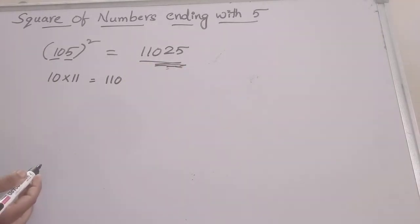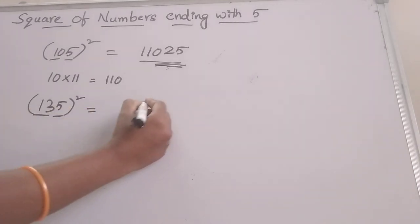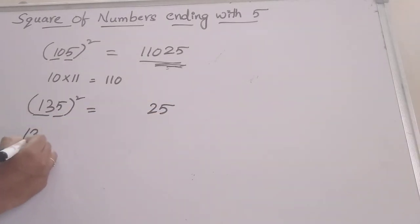And next, we can go to one more example: finding the square of 135. Same process - we divide it into two parts. 5 squared is 25. And this 13 should be multiplied with 14. In this case, we are finding the multiplication of two two-digit numbers.